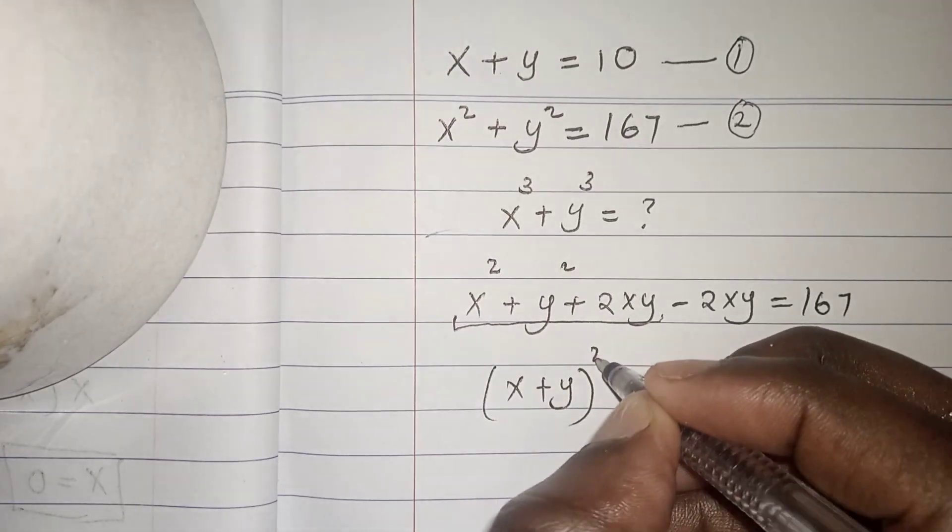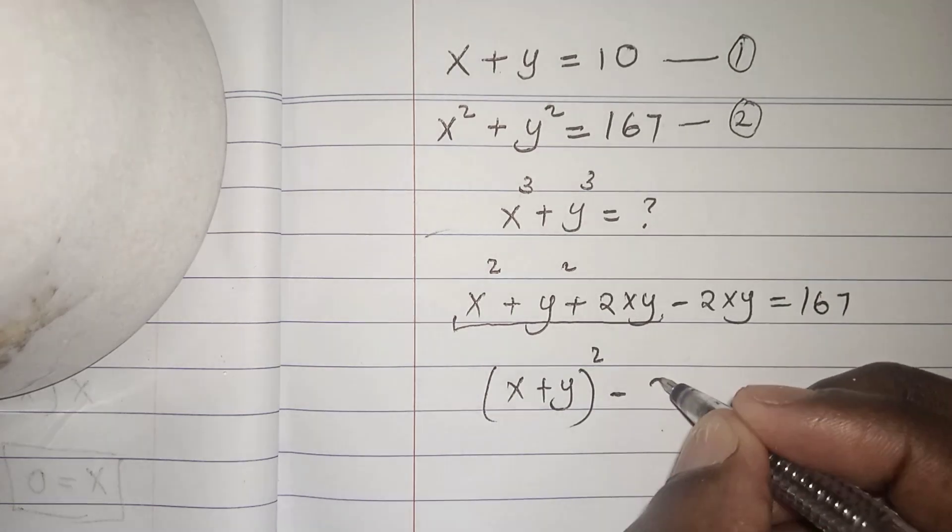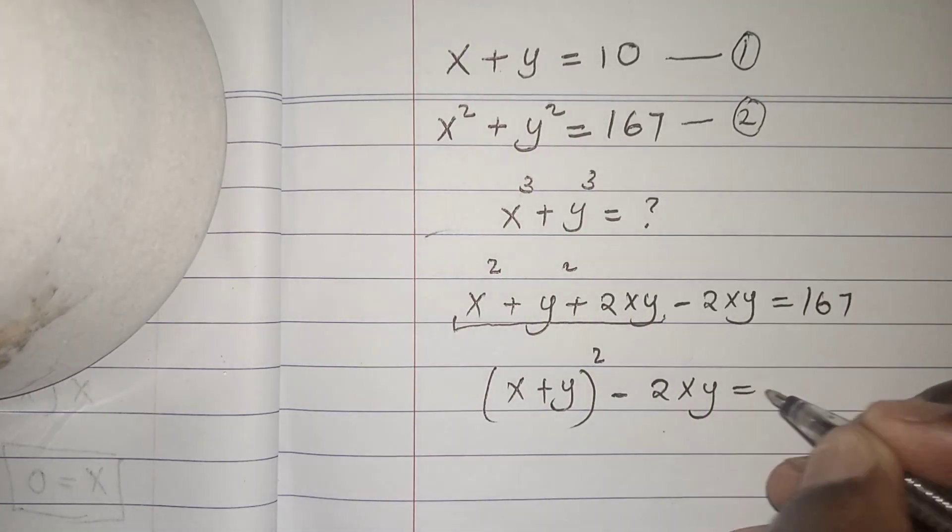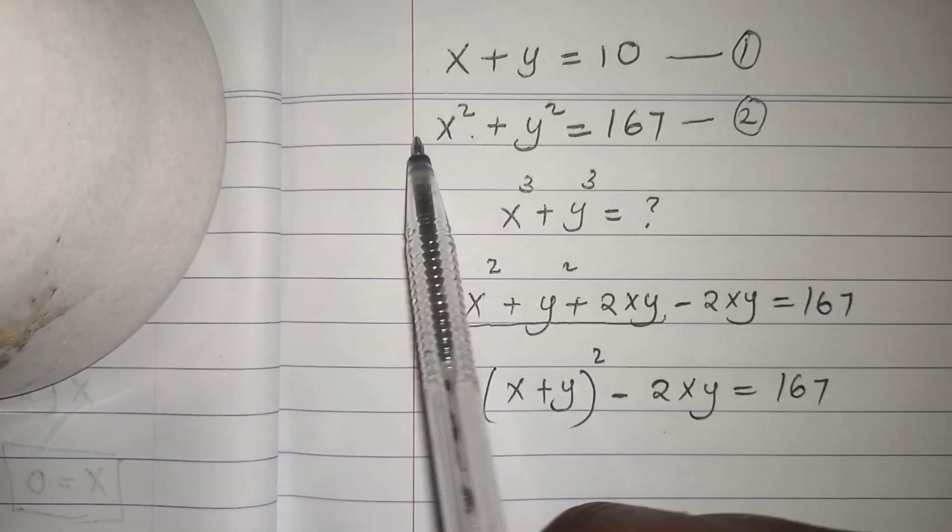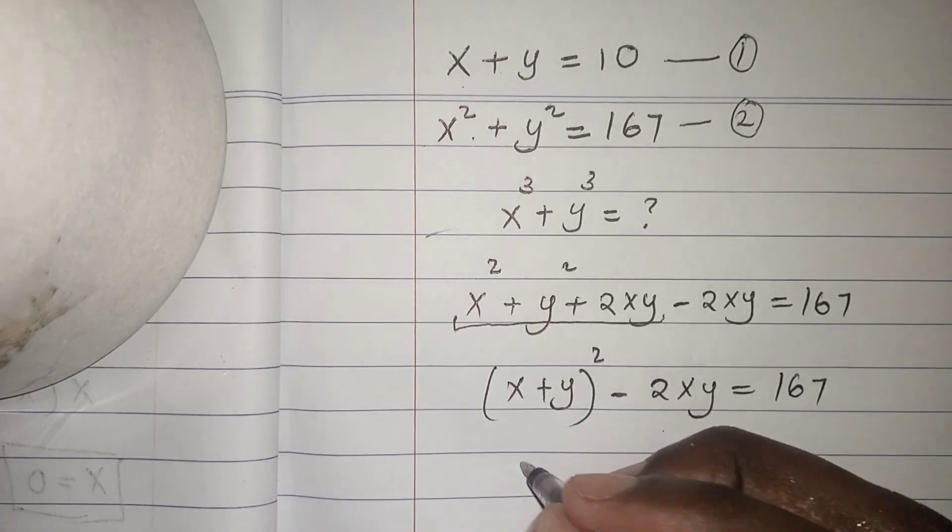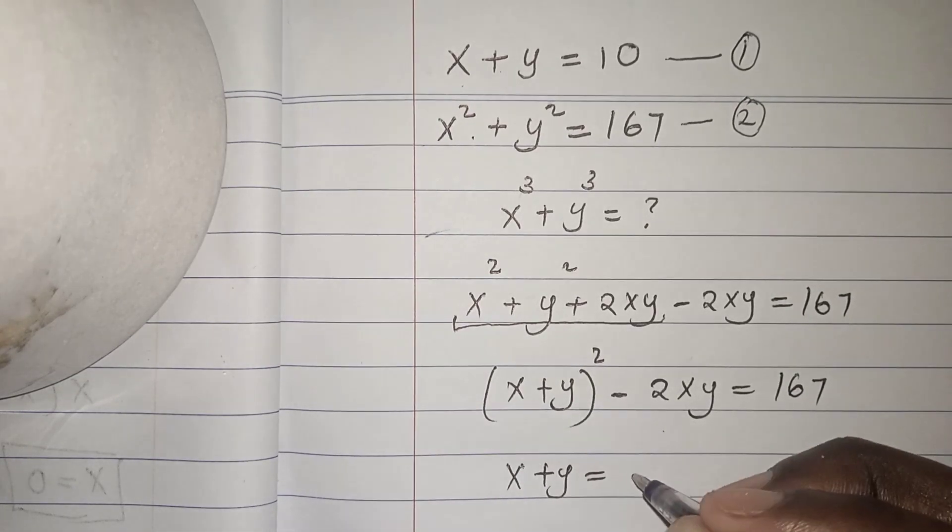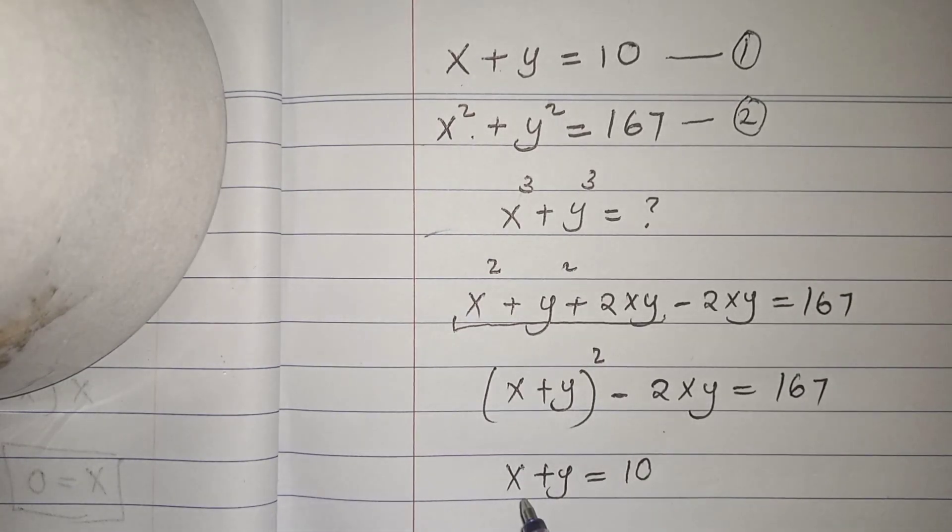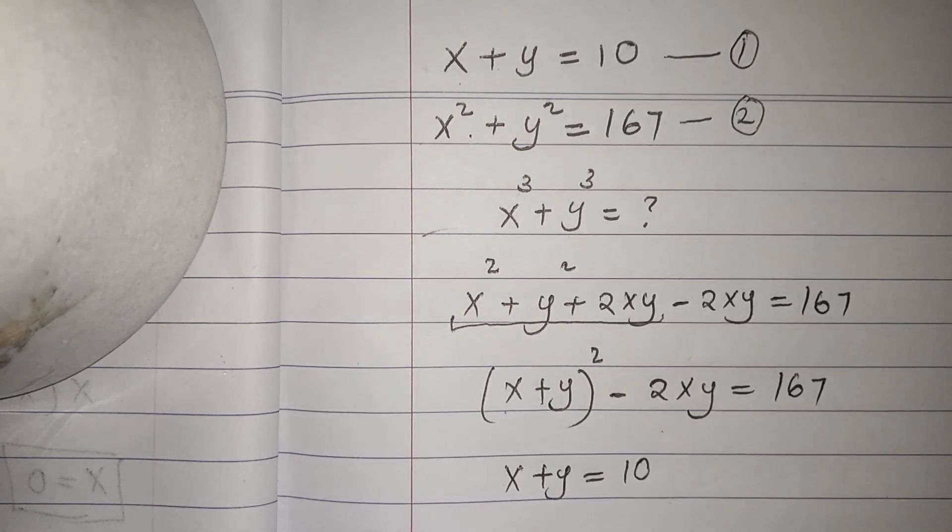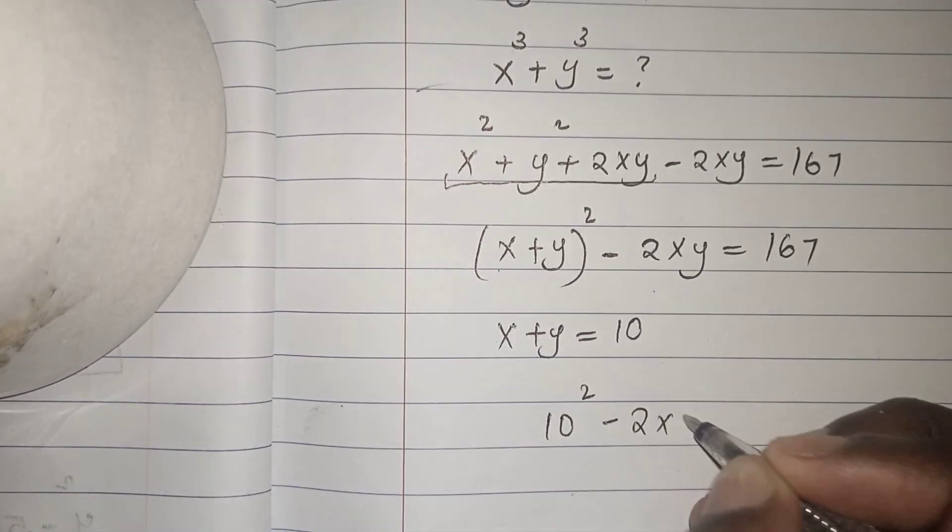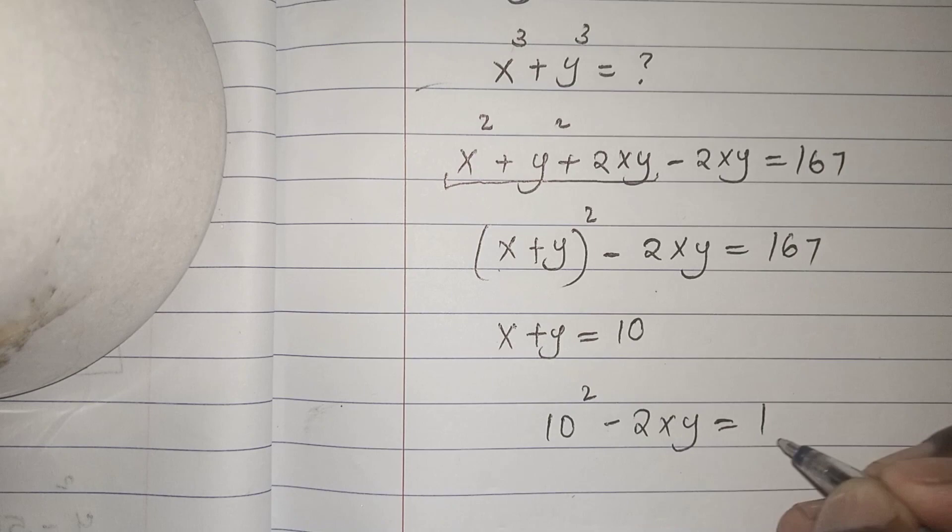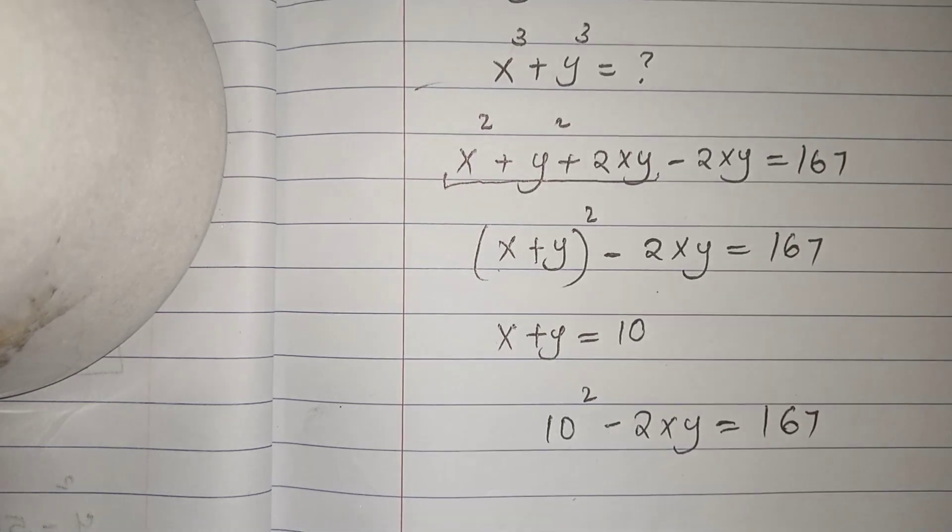all squared, minus 2xy equals 167. So from our equation 1, which is x plus y equals 10, and we have x plus y squared. So this means that 10 squared minus 2xy equals 167.